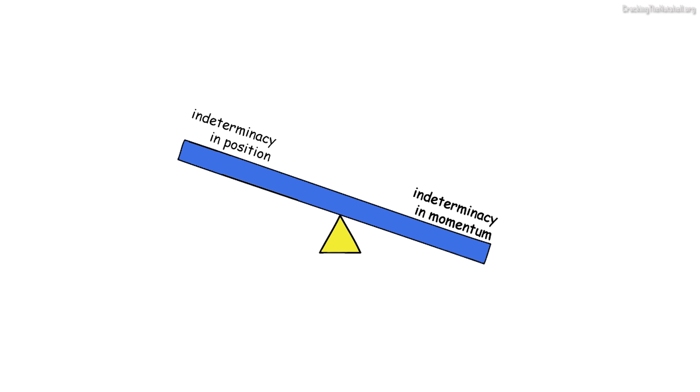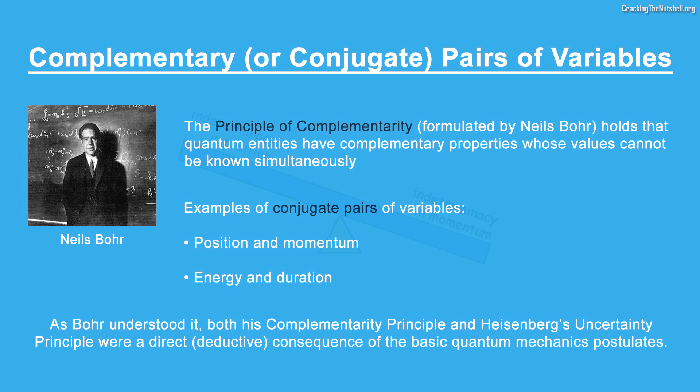In physics, these pairs of properties are called complementary or conjugate observables. Which brings me back to the concept of complementarity. In my next video, I'll cover Bohr's principle of complementarity in much more detail. We'll talk about complementary observables and how all of these ideas relate to the uncertainty principle and its derivation. I'll also show you other forms of the uncertainty principle which involve other pairs of observables, such as energy and duration.